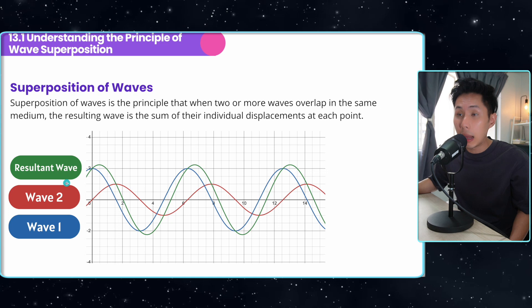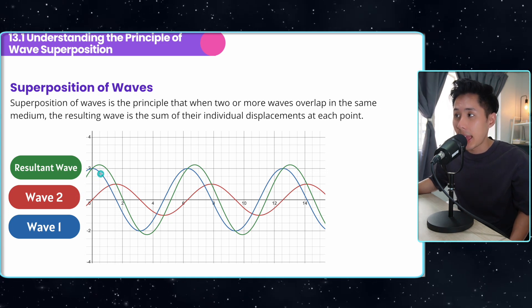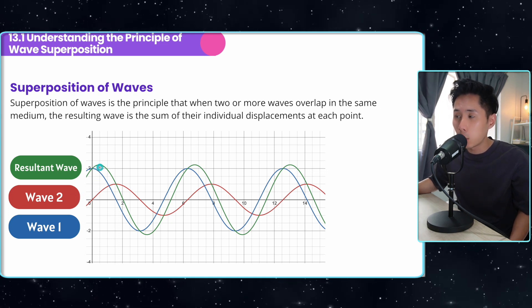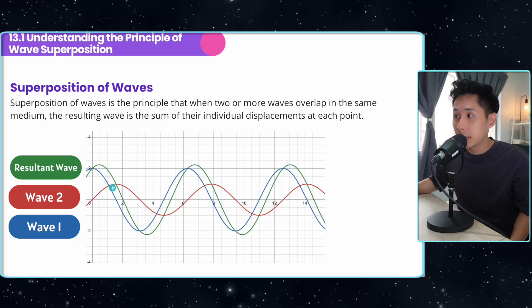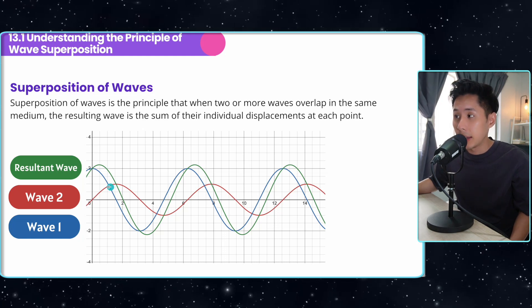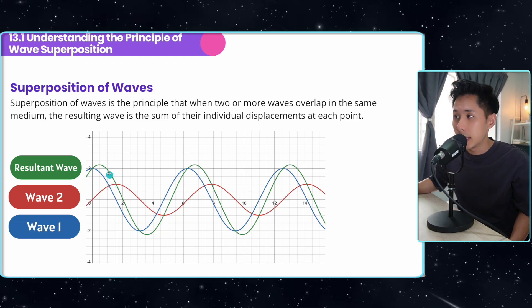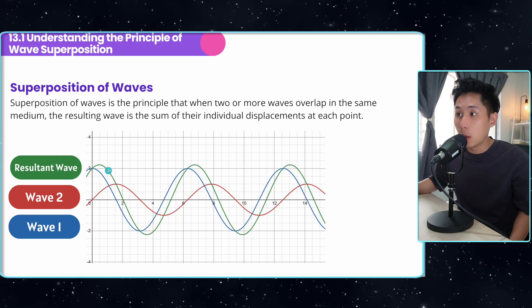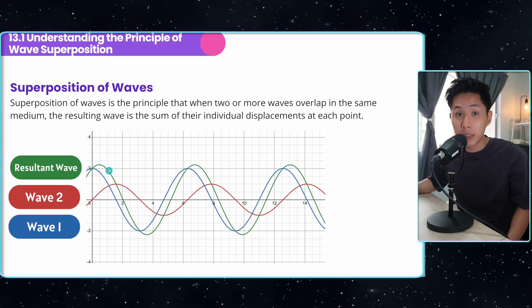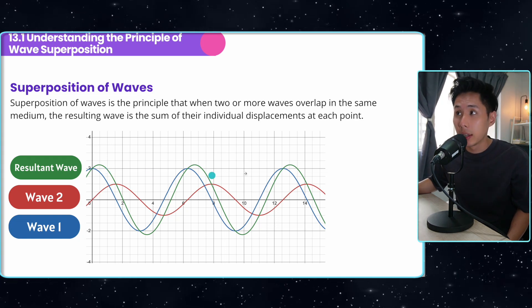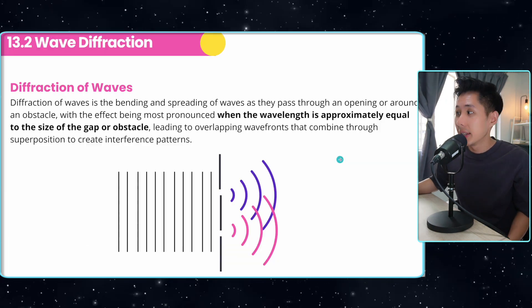For example, I have this graph here with wave 1 and wave 2, and the green color wave is the resultant wave. If I were to add up the amplitude of the blue wave and the red wave, I'll get the new amplitude of the resultant wave, which is the green wave. So that's an example of superposition.